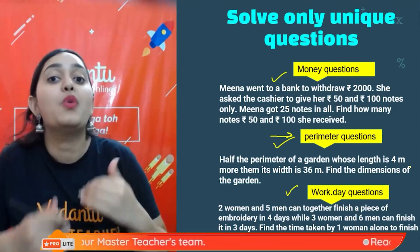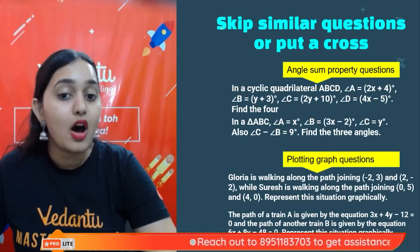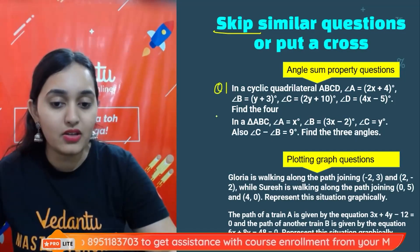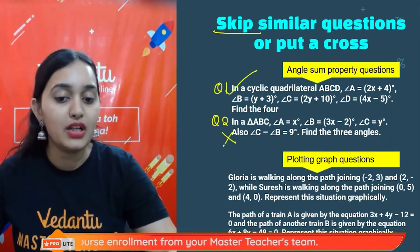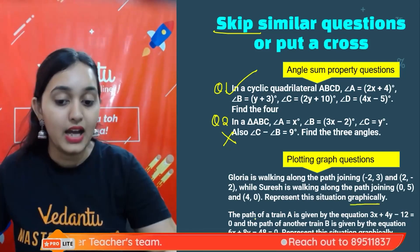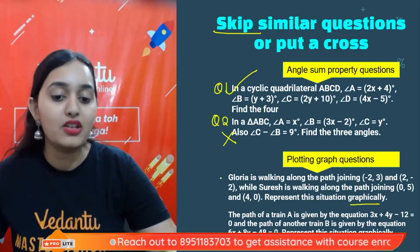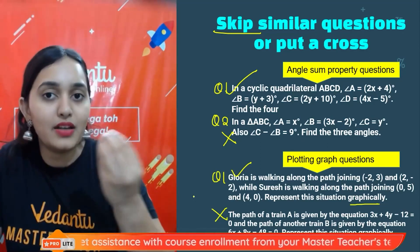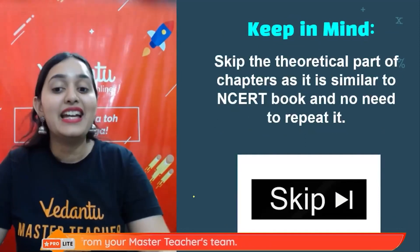The next point: simply skip or put a cross on questions that are very similar to ones you've already done. For example, if two questions are both based on the angle sum property — solve question number one, then skip question number two. Similarly, if two questions both ask you to 'represent the situation graphically,' solve one and skip the other. Marking these will help you remember later which questions are unique and which are repeated.